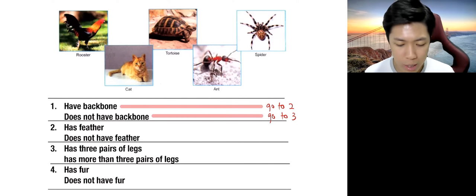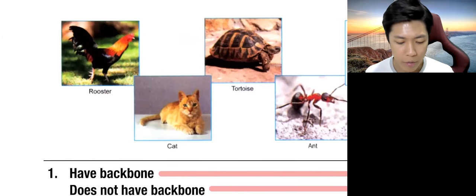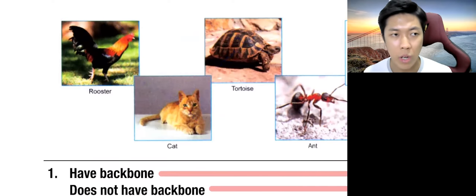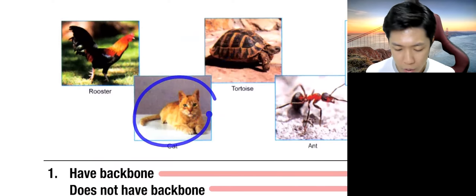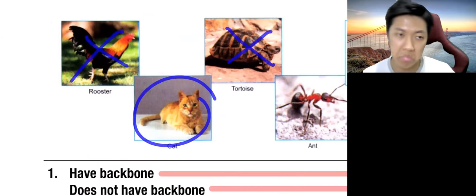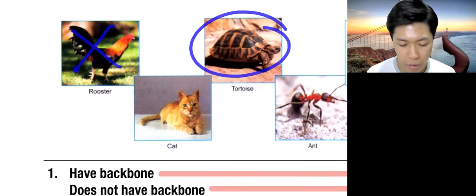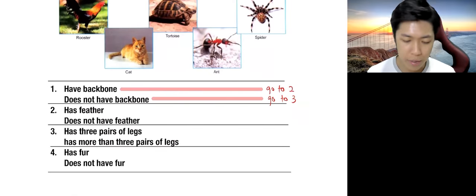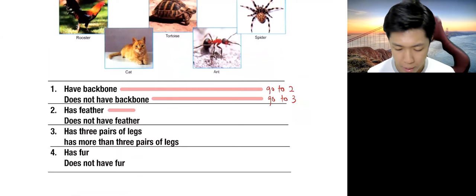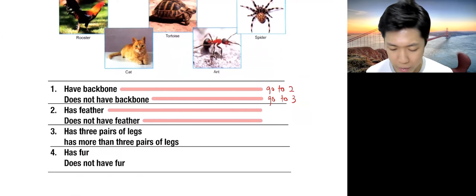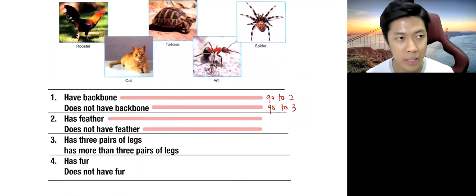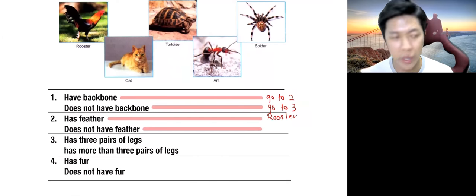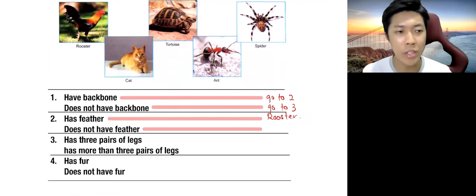So you could ask questions like has feather, does not have feather or has fur, does not have fur or has hard shell, does not have hard shell. It's up to you. So what I've chosen is has feather and does not have feather. So has feather, I have answer ready, which is rooster. There you go.